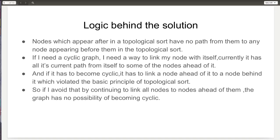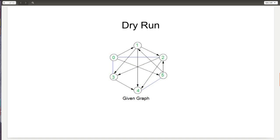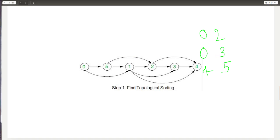Now let's do a dry run of the solution. Let's take the same graph which we have seen before, where we have three undirected edges: 0 to 2, 0 to 3, and 4 to 5. If we perform the first step — topological sorting of this given graph considering just the directed edges — we will get this order: 0, 5, 1, 2, 3, 4.